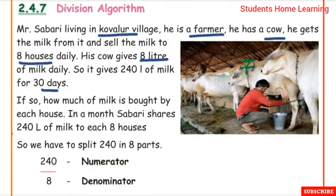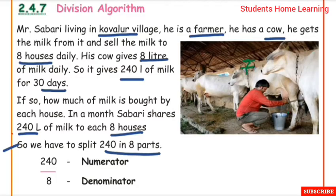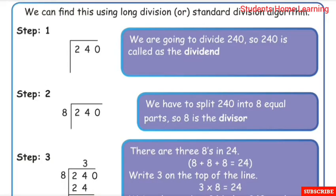The cow gives 240 litres of milk in 30 days. So we have to split 240 into 8 parts — that's why 240 divided by 8. It is a fraction: 240 as numerator and 8 as denominator. We can also find this using long division or standard division algorithm.